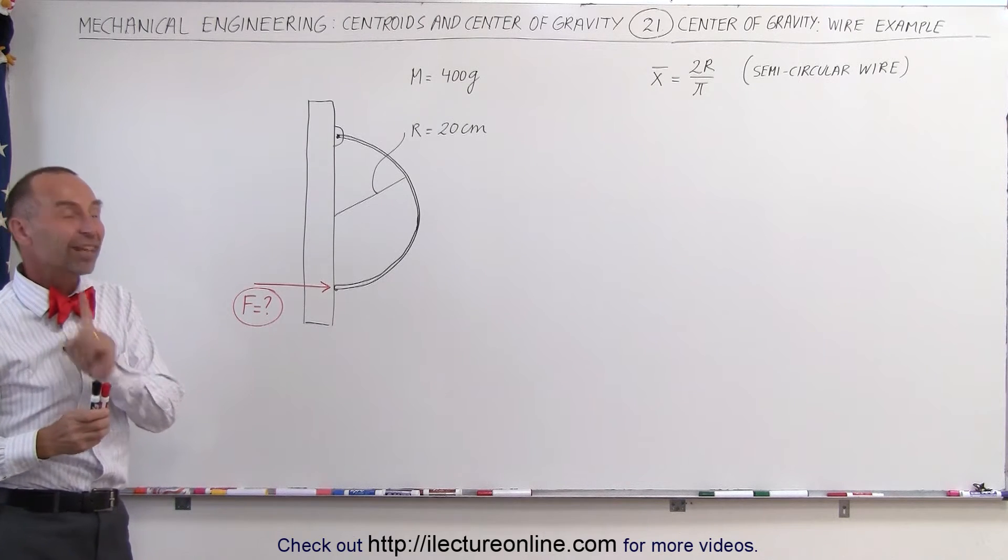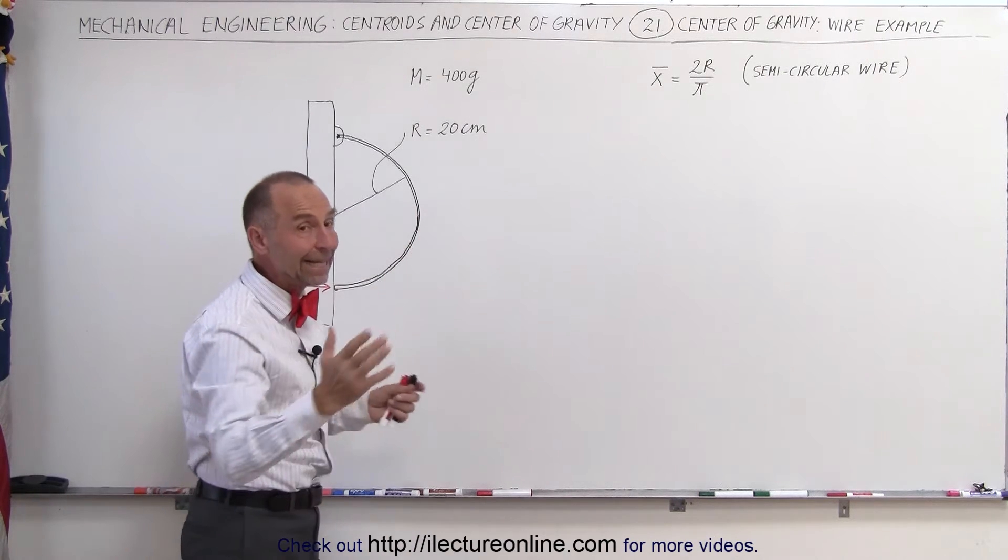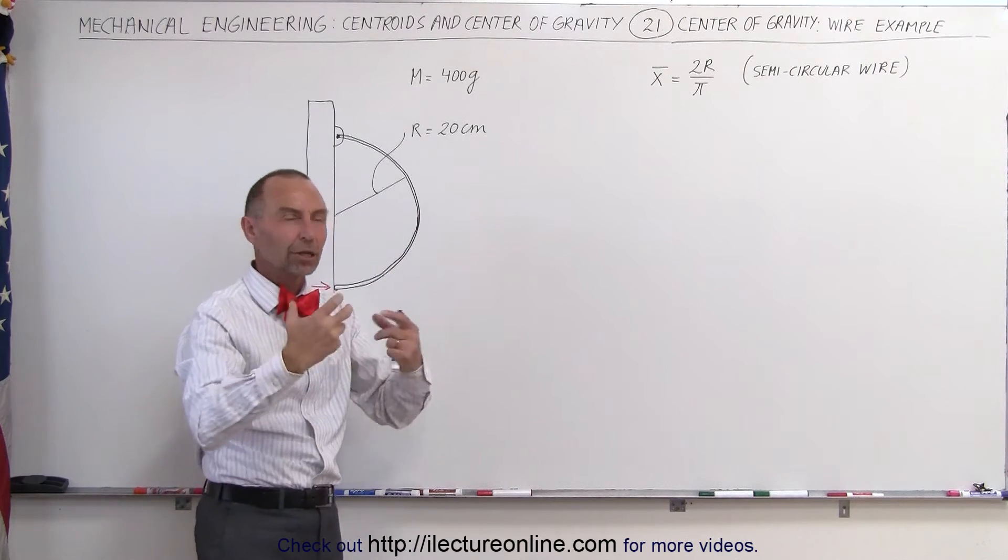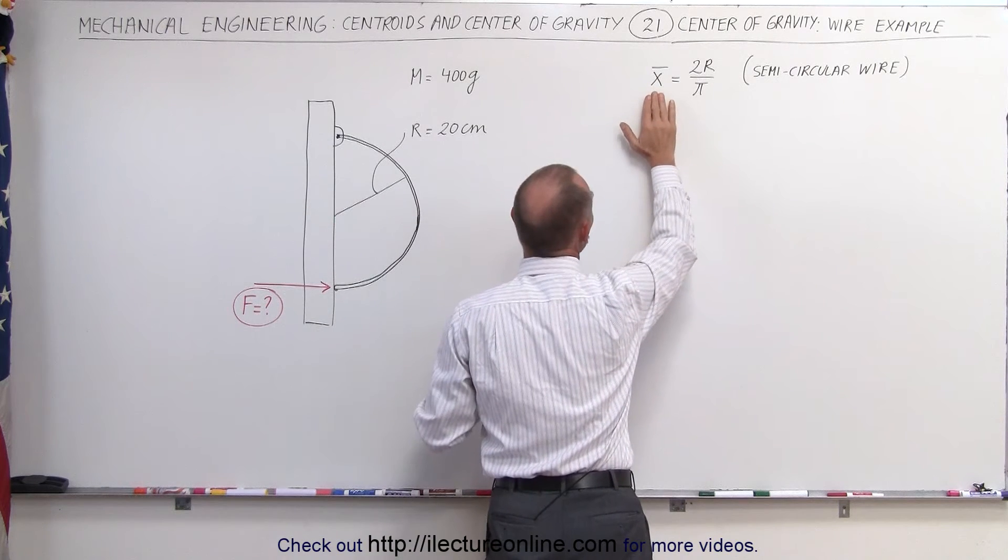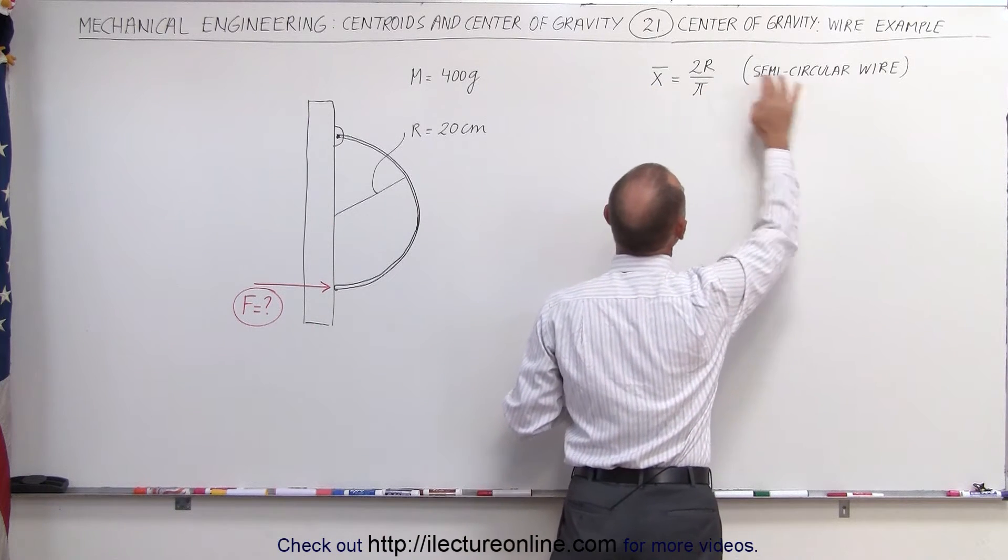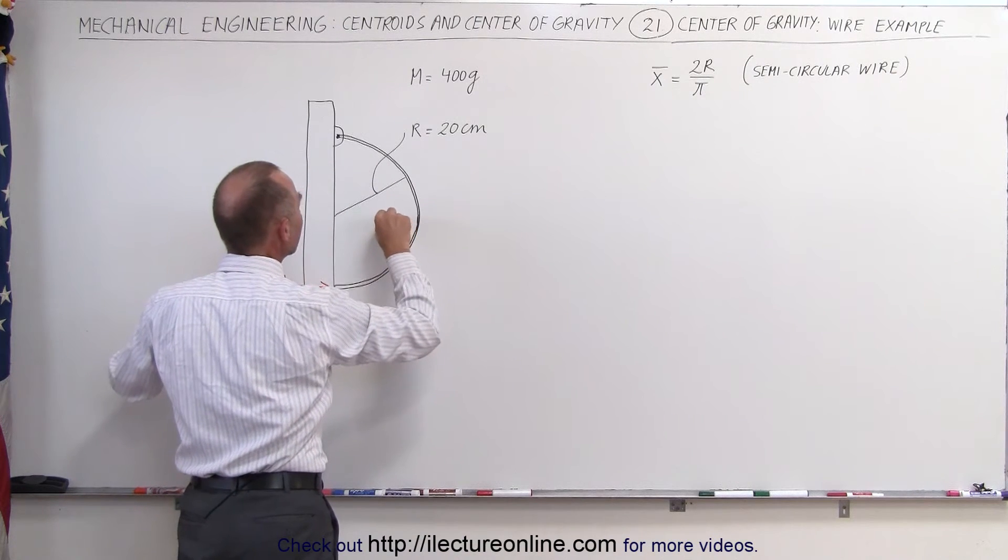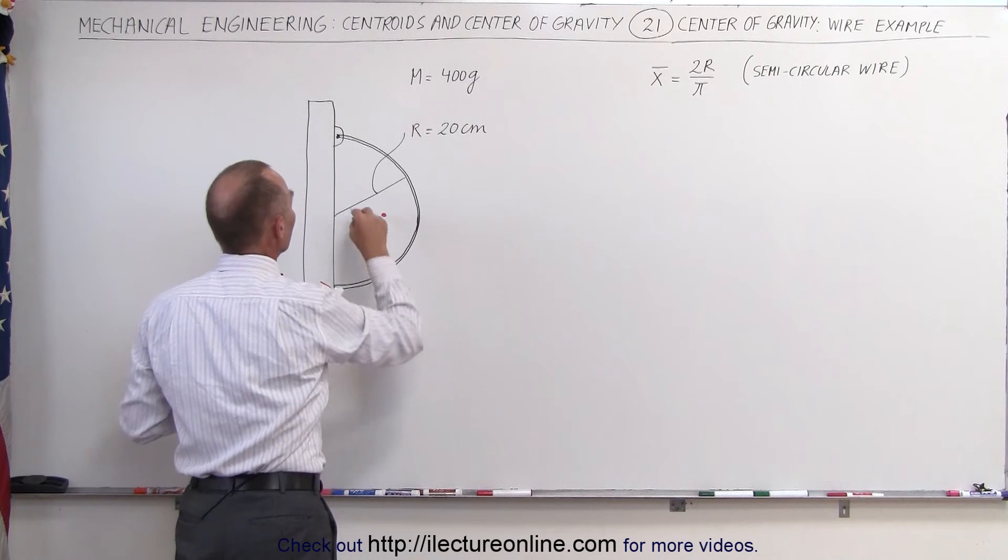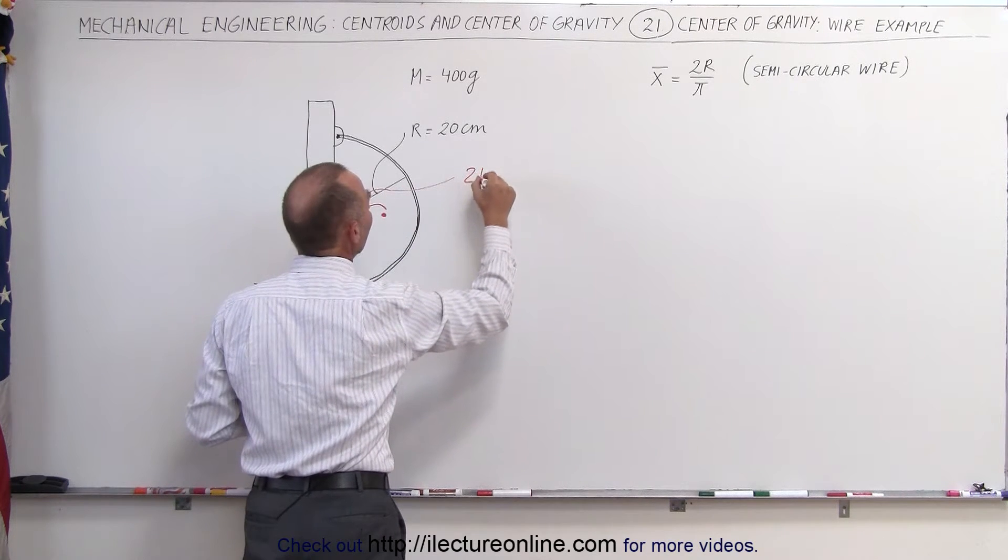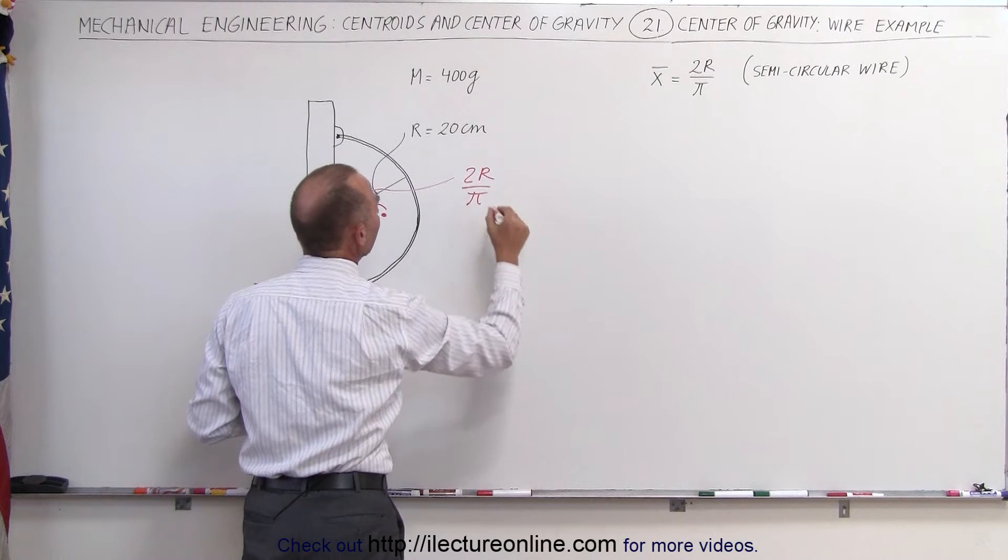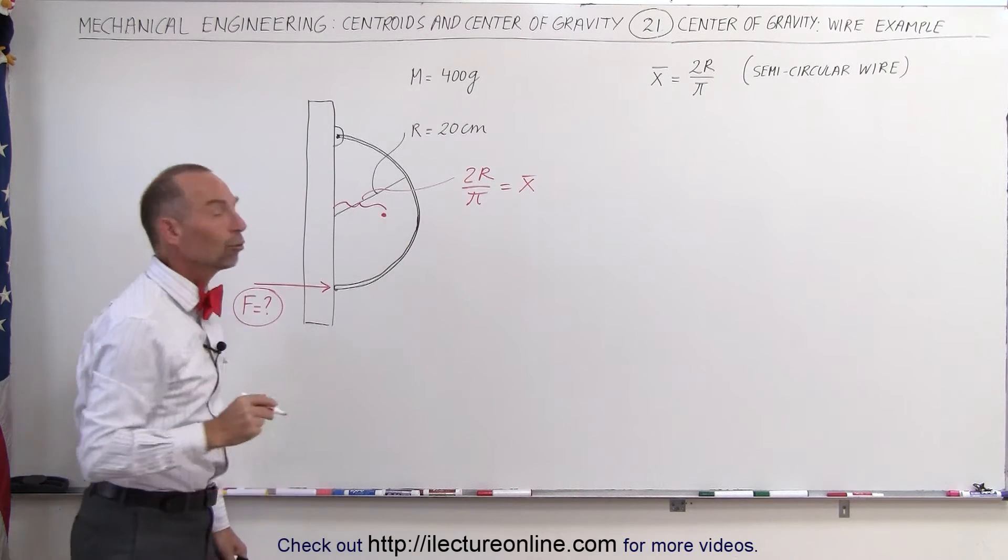First of all, we need to find the center of mass of this semicircular wire. Just to make it easy, we're supposed to be able to go to a table and look up these values. We know that in this case, in the x direction, the center of mass of a semicircular wire is two times the radius divided by π, which puts it right about here. This distance here can be said to be 2R/π, and that equals the x coordinate of the center mass of this wire.